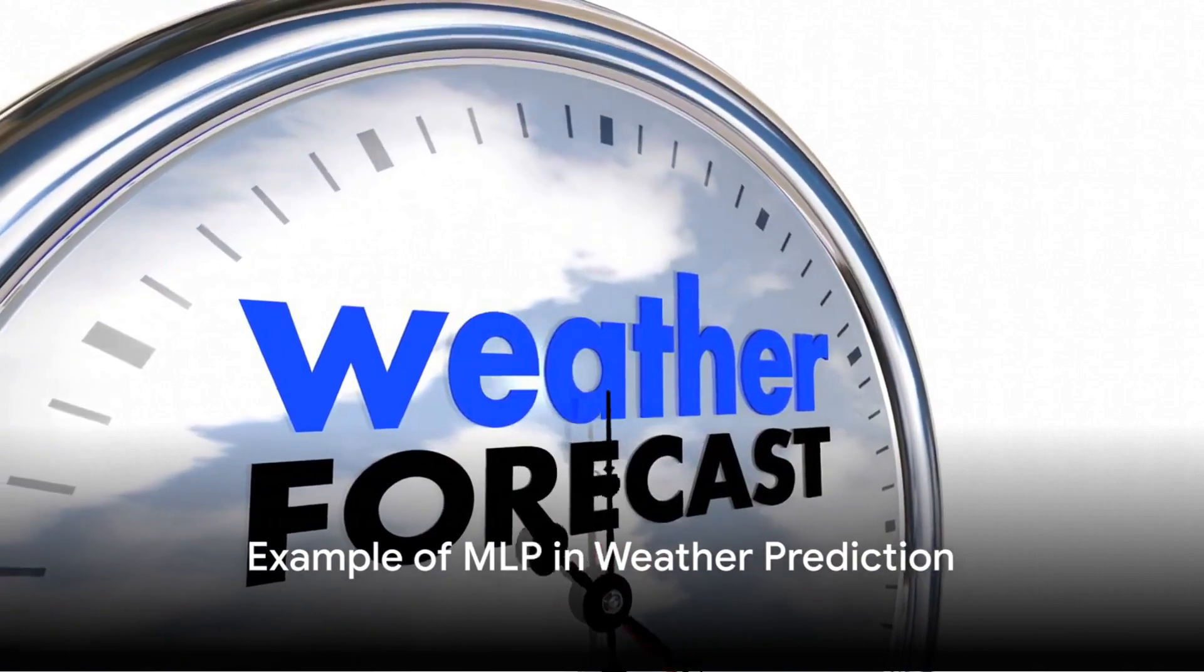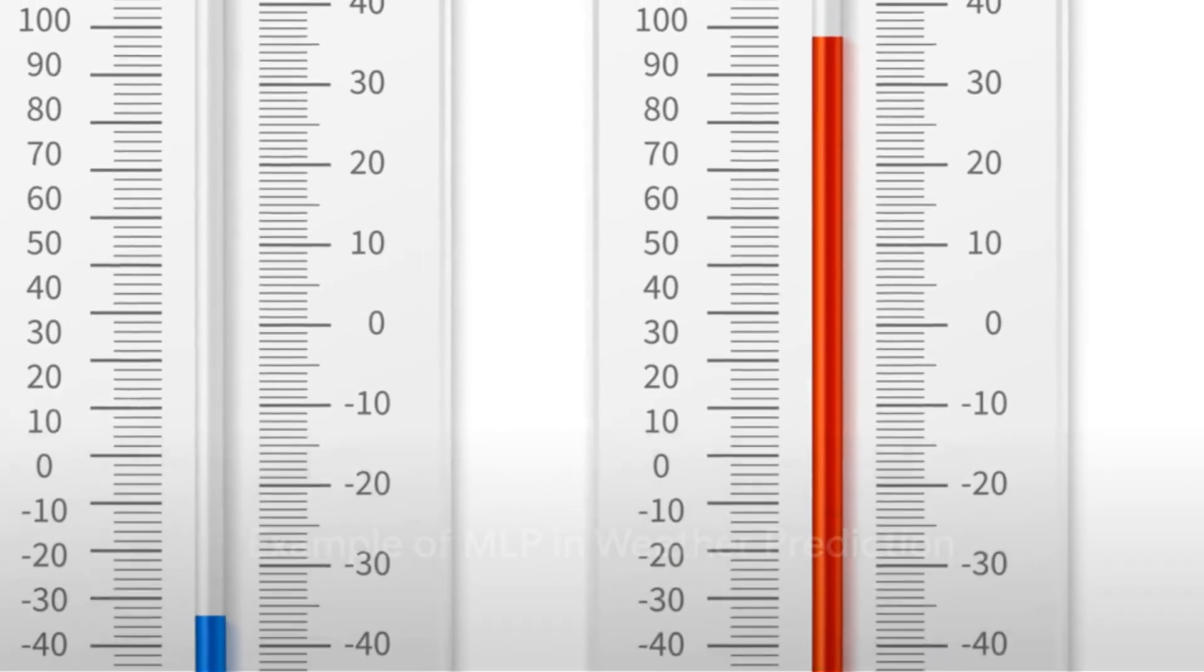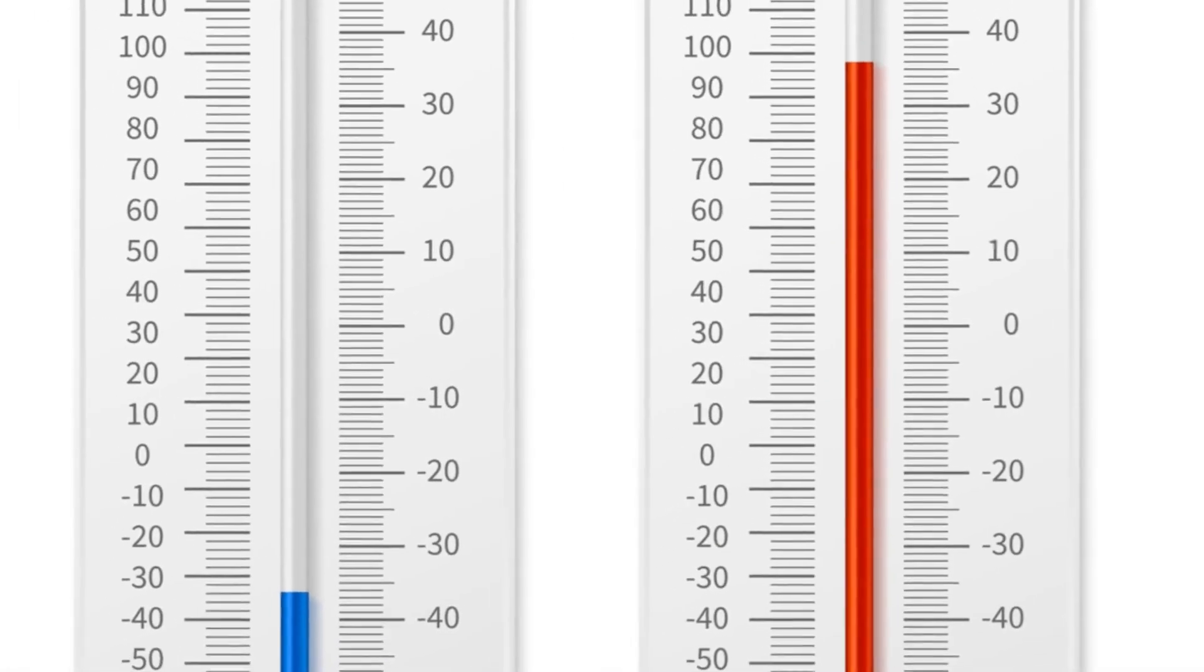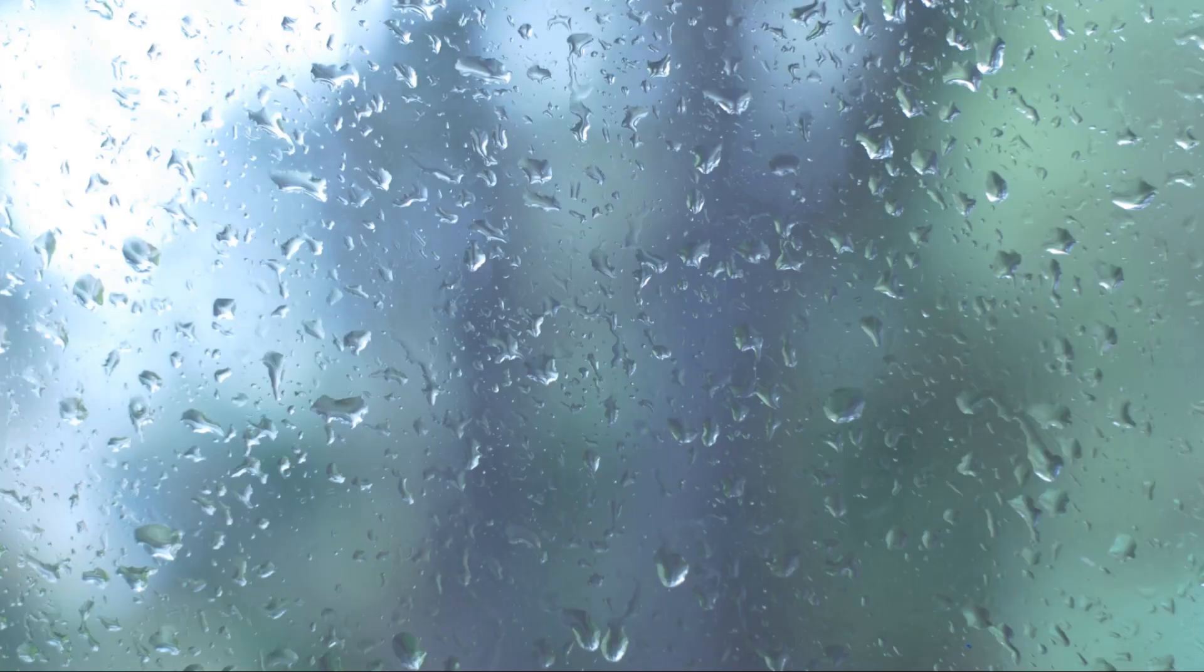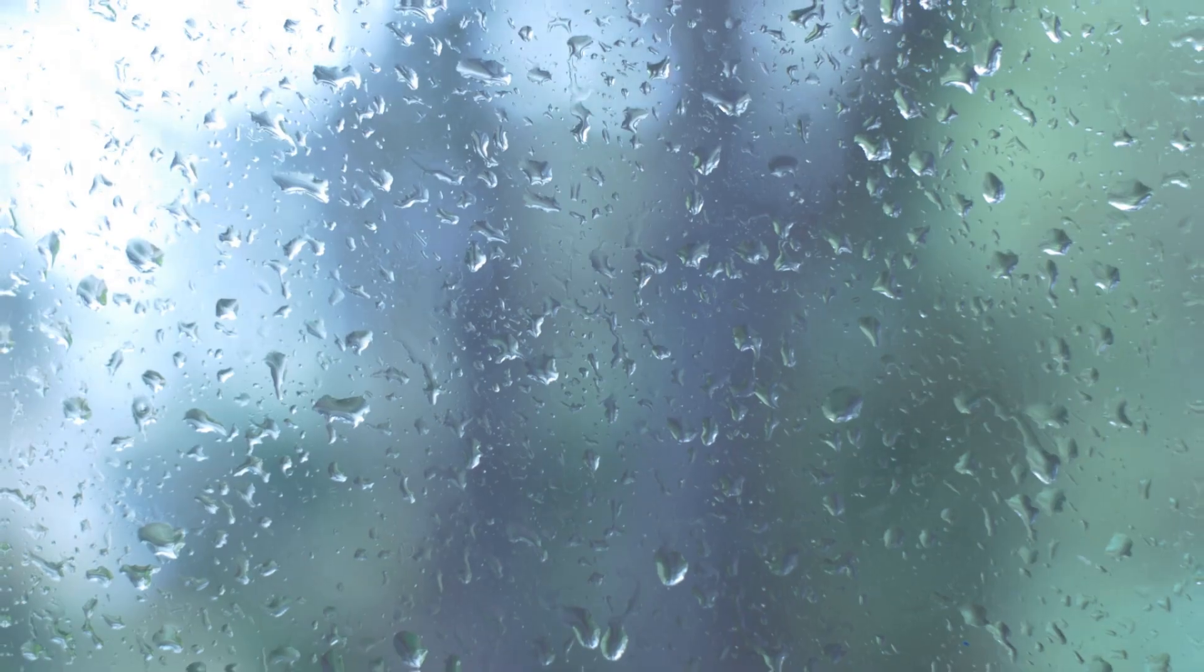Imagine you're trying to predict the weather. The temperature, humidity, wind speed, and so forth would be your inputs. The hidden layers would then crunch these numbers, and the output layer would tell you if it's likely to be sunny or rainy.